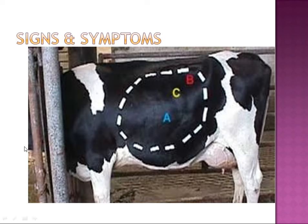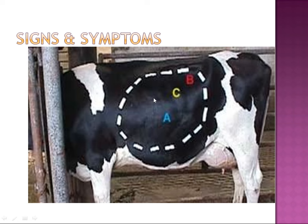In this image, the label 'A' indicates the displaced abomasum clearly shown in the diagram. The blue 'A' is indicating the left displaced abomasum in cows.